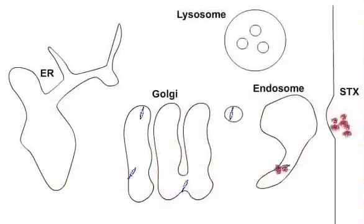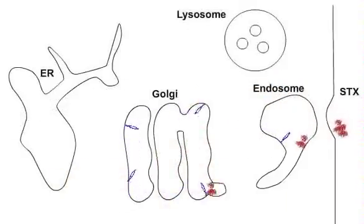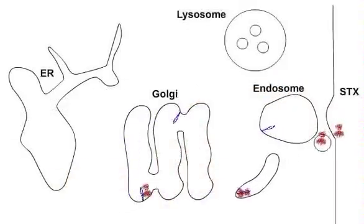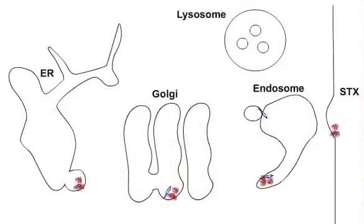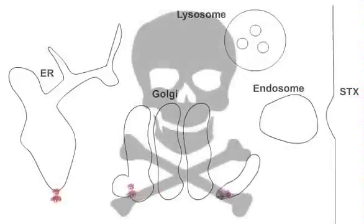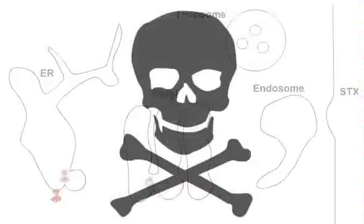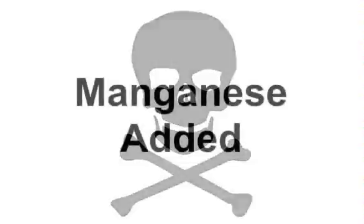It binds and moves into a tubular membrane projection which takes it and the shigatoxin back to the Golgi, to the ER, and from there the toxin can cause cell death.